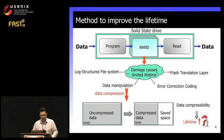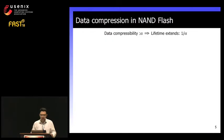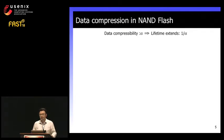This is common sense, but the question is: what is the quantitative relationship between data compressibility and lifetime improvement? One may simply expect that storing data with an average compression ratio alpha can directly reduce damage by a factor of alpha, achieving lifetime improvement by a factor of 1 over alpha. But this is not always true when considering some practical facts.